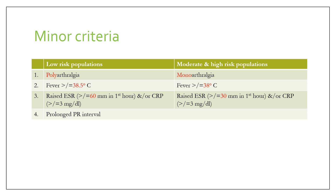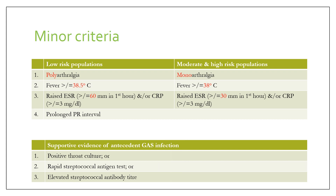Chorea, erythema marginatum, and subcutaneous nodules remain the same in both kinds of populations. As regards minor criteria, in low-risk populations polyarthralgia is considered, whereas in moderate-to-high-risk populations monoarthralgia applies. Fever is defined as more than or equal to 38.5°C in low-risk populations, versus more than or equal to 38°C in moderate-to-high-risk. ESR must be more than or equal to 60 mm in low-risk, versus more than or equal to 30 in high-risk. CRP must be more than or equal to 3 in both. Prolonged PR interval remains the same in both. Supportive evidence of antecedent group A streptococcal infection — positive throat culture, rapid streptococcal antigen test, or elevated streptococcal antibody titer — stays the same.